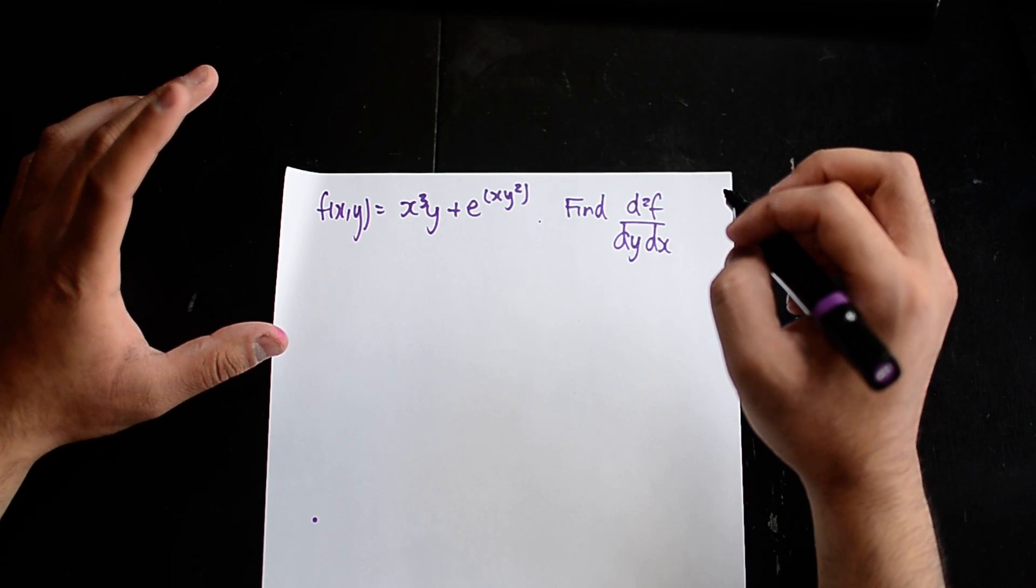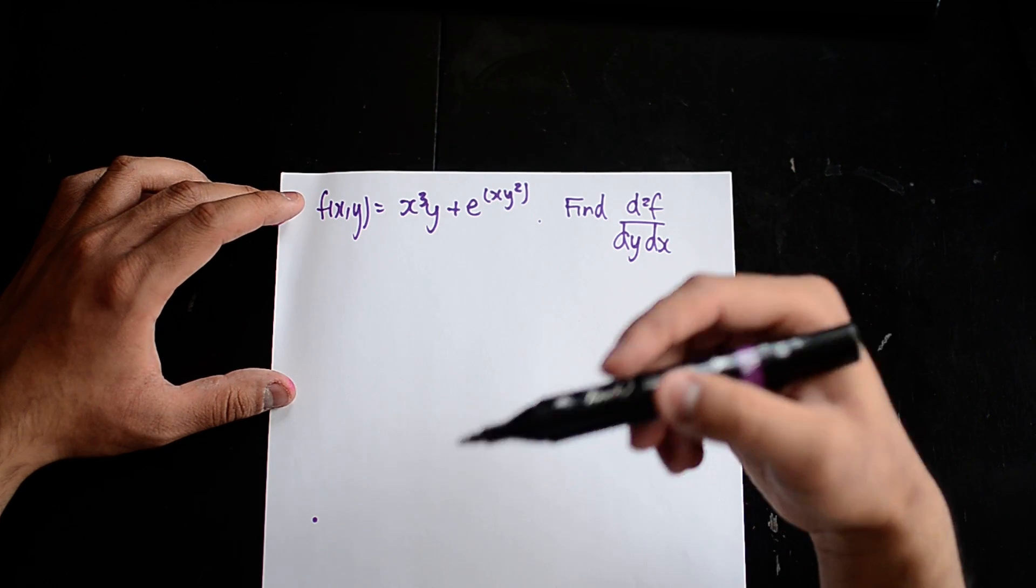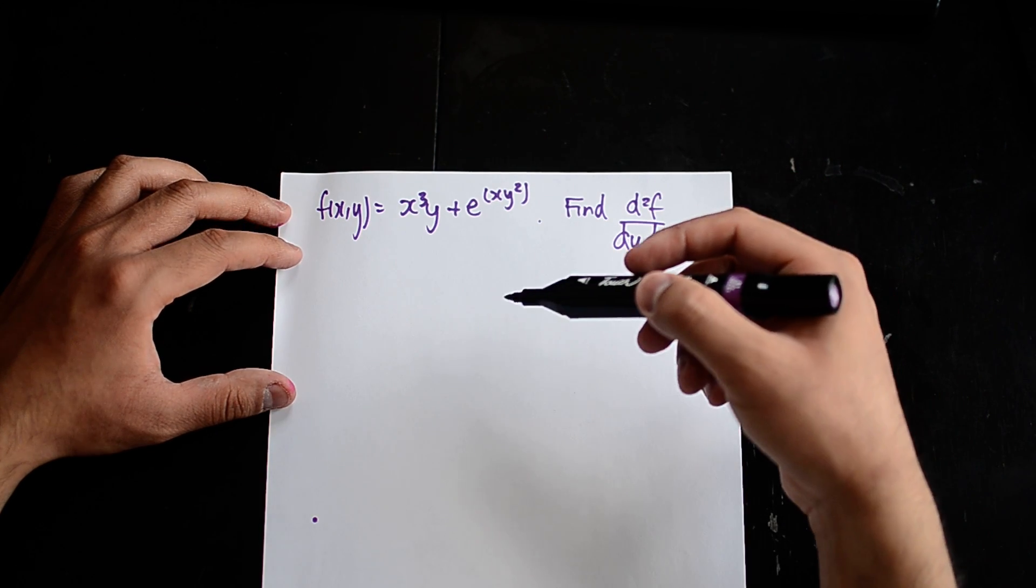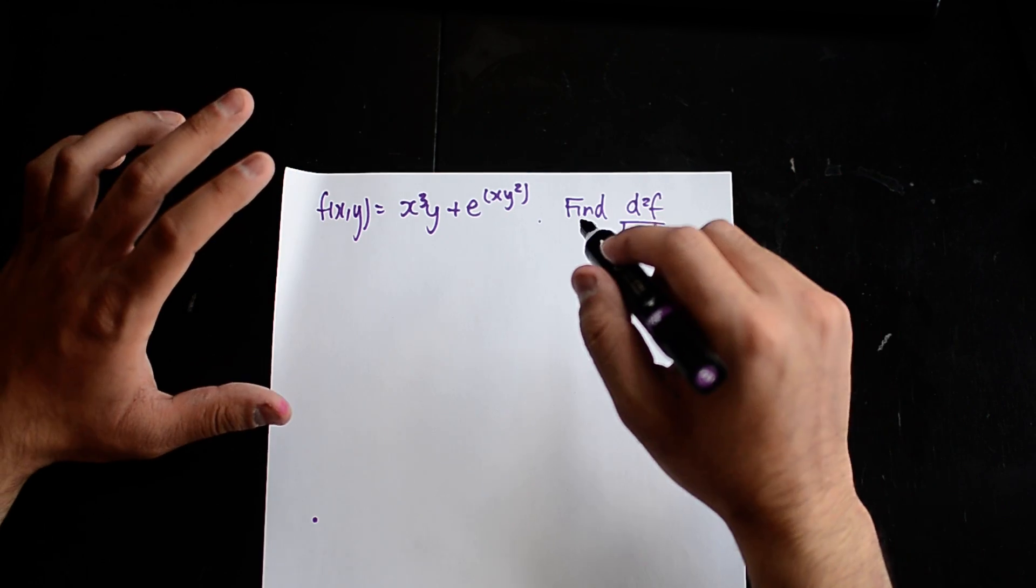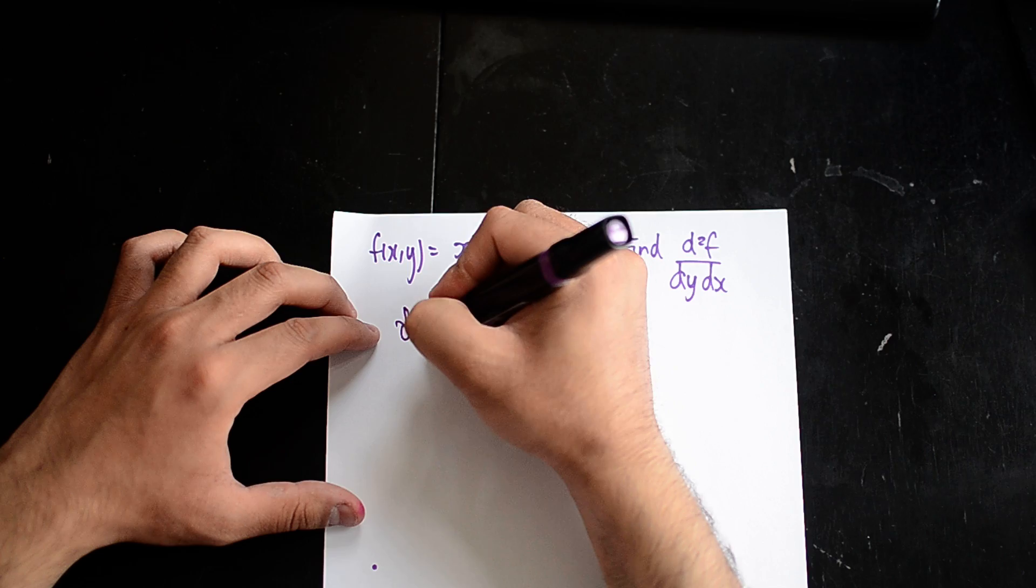You're going to be differentiating it by df over dx and df over dy, but in a very different way. Firstly, the first step that you take is you differentiate in terms of x.